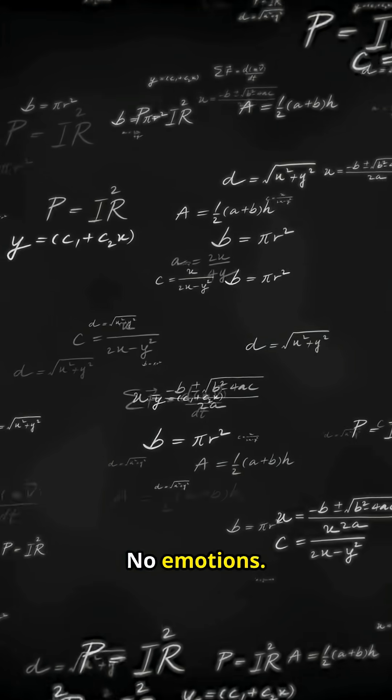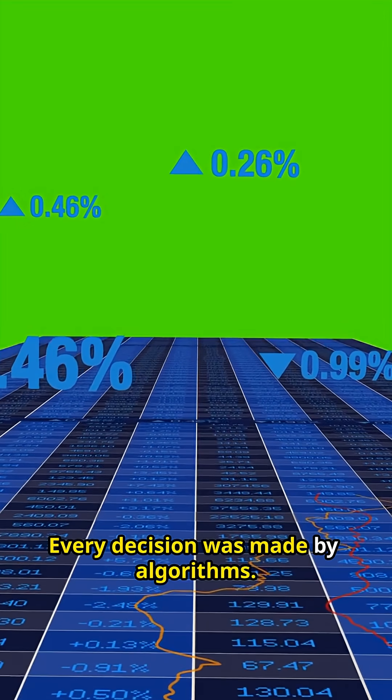Simons also said, if you're relying on experts, you're probably wrong. No forecasts, no predictions, no emotions. Every decision was made by algorithms.